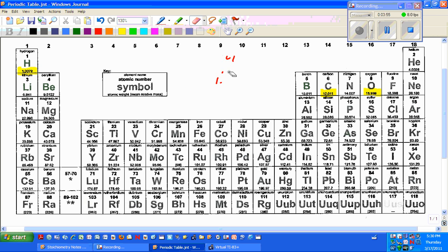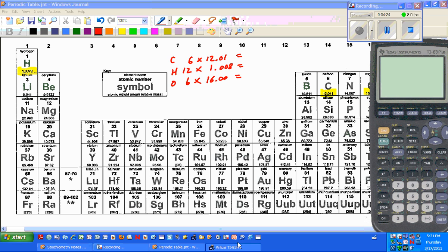Let me get rid of this stuff here from the last problem. I've got C6, that's six times 12.01. I've got 12 times carbon—this is for hydrogen—I've got 12 times 1.008 for my hydrogen, and I've got six times 16.00 for my oxygen. So again I'm getting this off of the periodic table.